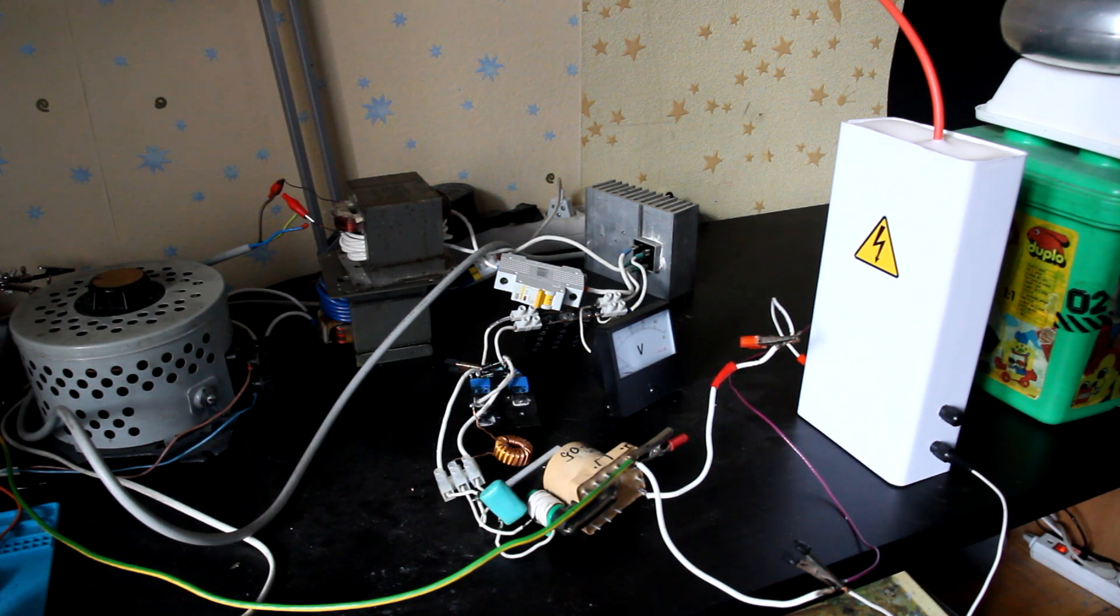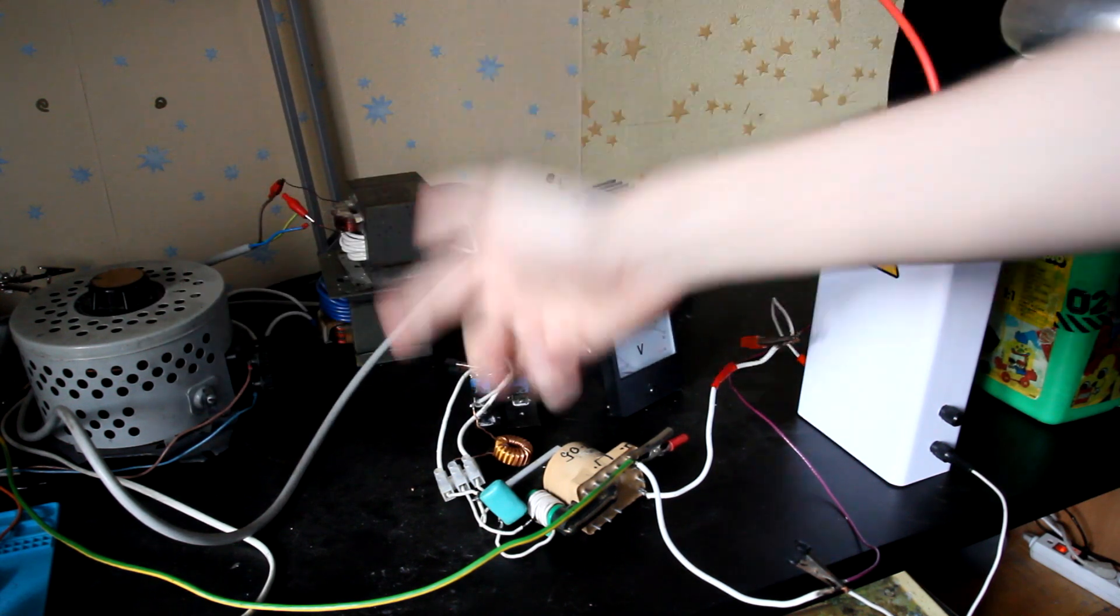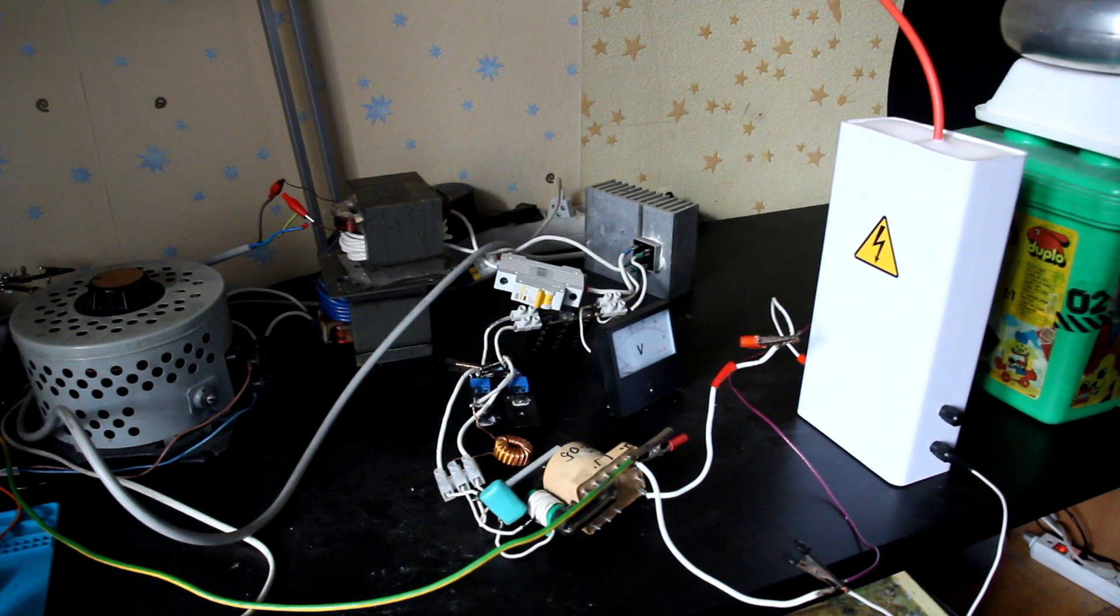First, let's see how I'm powering it, and then we'll see some sparks and corona. The voltage from the mains goes into the Variac, then through the Variac to the microwave oven transformer, which I've modified so it produces low voltage and high current.